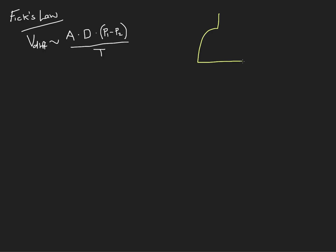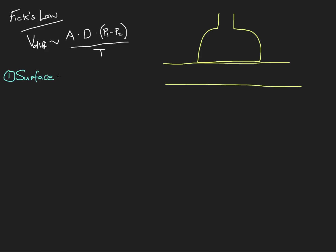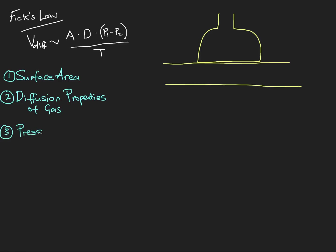Let's draw out our blood-gas barrier here. So we said that, one, the surface area is going to affect the amount of diffusion. We also said that the diffusion properties of the gas are going to affect the amount of diffusion that can take place. The partial pressure difference — let's call this the pressure gradient — is going to affect diffusion. And the thickness of the barrier is also going to affect the amount of diffusion that can take place.